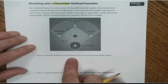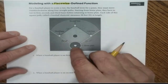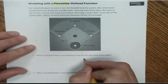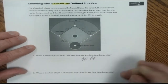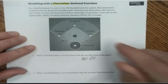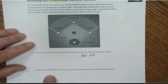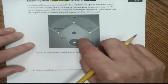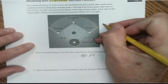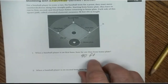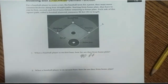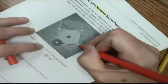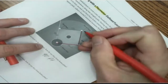When a baseball player is on first base, how far are they from home plate? He's 90 feet — it's just a straight line. When a baseball player is on second base, your instinct might say 180 feet. But that would be if he ran straight another 90. He ran to first base and then turned, making a 90-degree angle to run to second base.